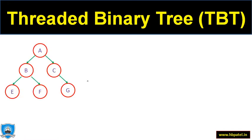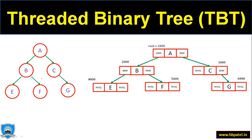Before we go to threaded binary tree, let us first try to understand a binary tree, which we have already discussed in our previous video. The condition for a binary tree is very simple: the number of children cannot be more than two. Every node can have a maximum of two children.